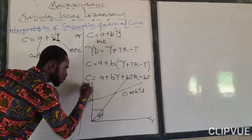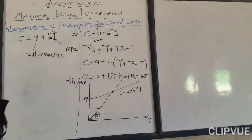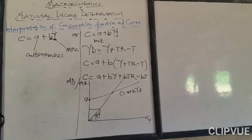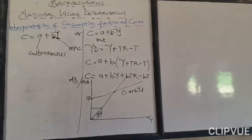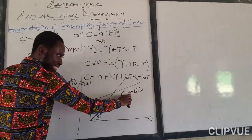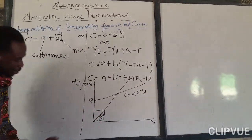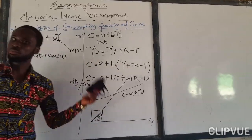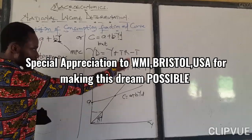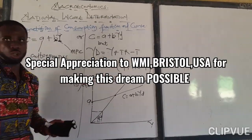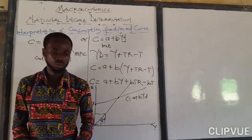On the vertical axis we have aggregate expenditure or aggregate demand. This is how we draw the consumption function — the intercept, which is autonomous consumption, is on the vertical axis, and the slope represents the Marginal Propensity to Consume. The 45-degree line represents the business cycle trend — the normal sequence of how the economy is supposed to behave.